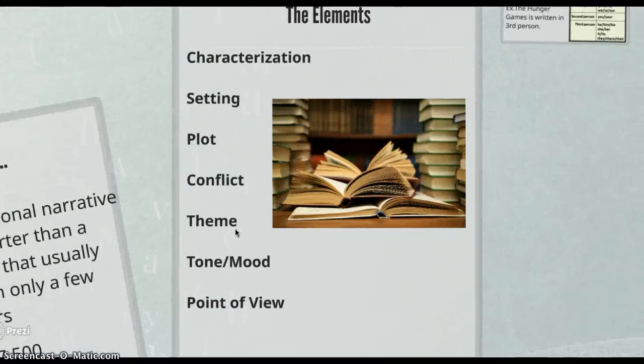Here are the seven elements that we're going to be going over: characterization, setting, plot, conflict, theme, tone and mood, and point of view. These are going to be the seven that fit into those seven spaces in your graphic organizer and I'm going to go through each of them individually.